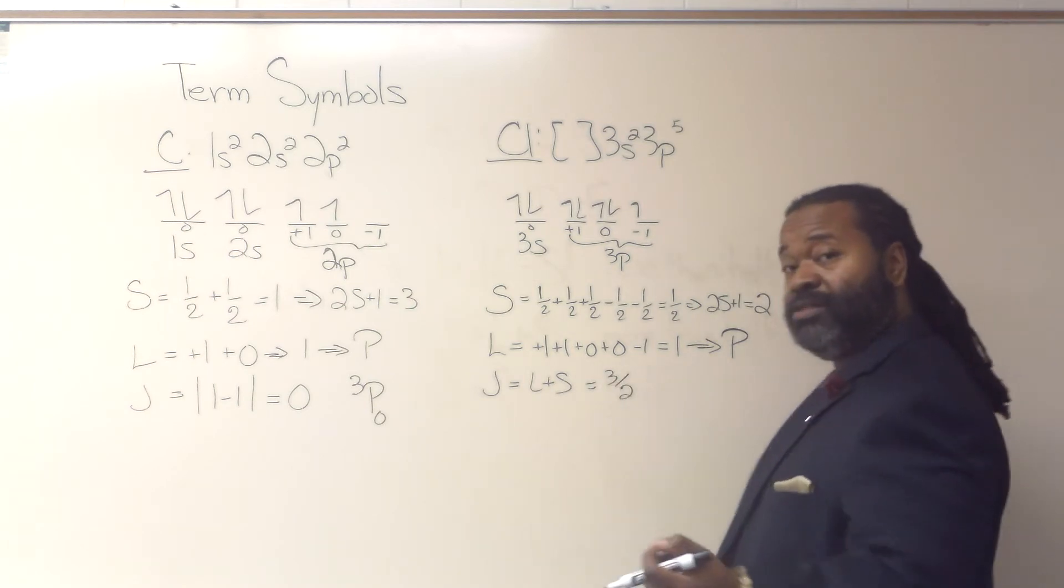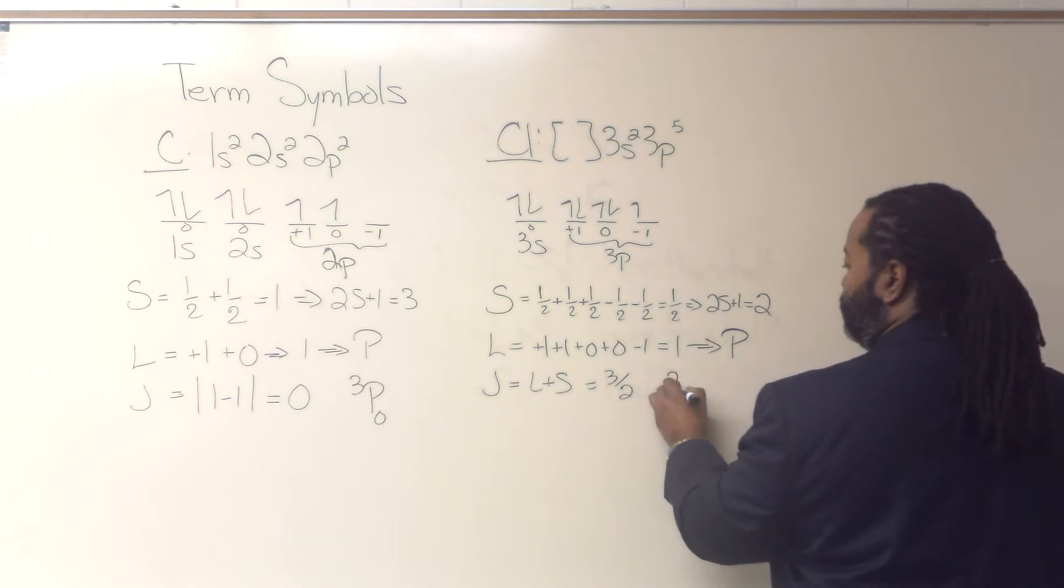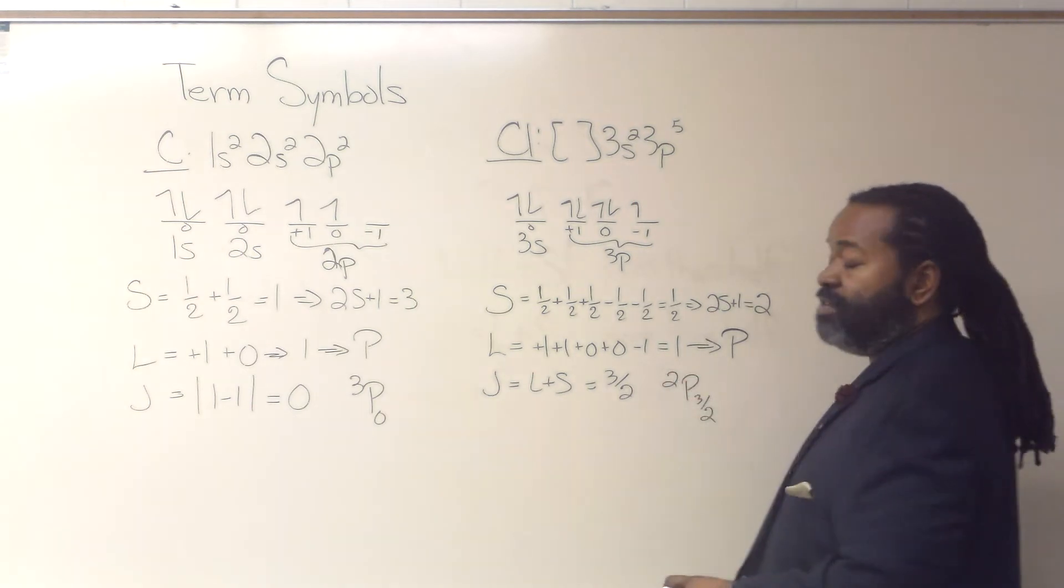And that means that our ground state term symbol for chlorine is going to be a doublet P 3 halves.